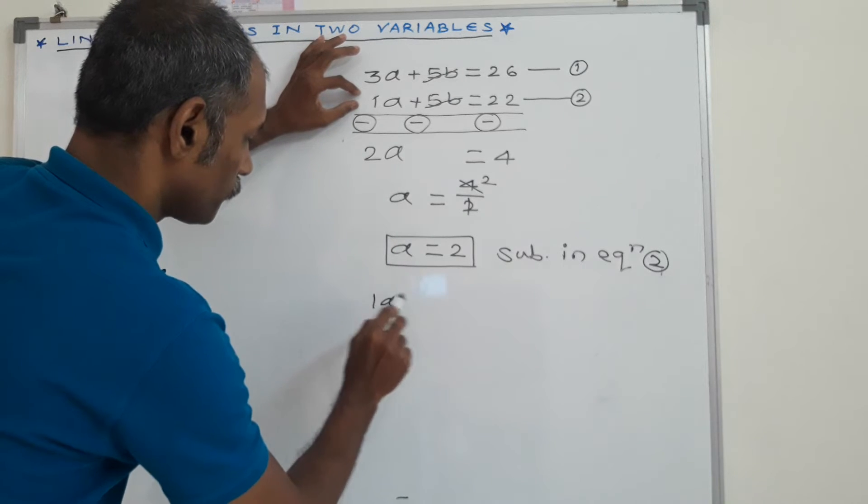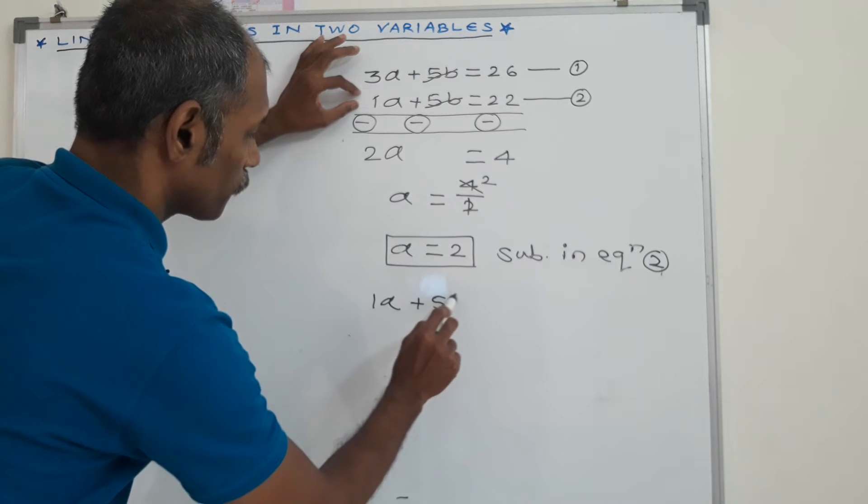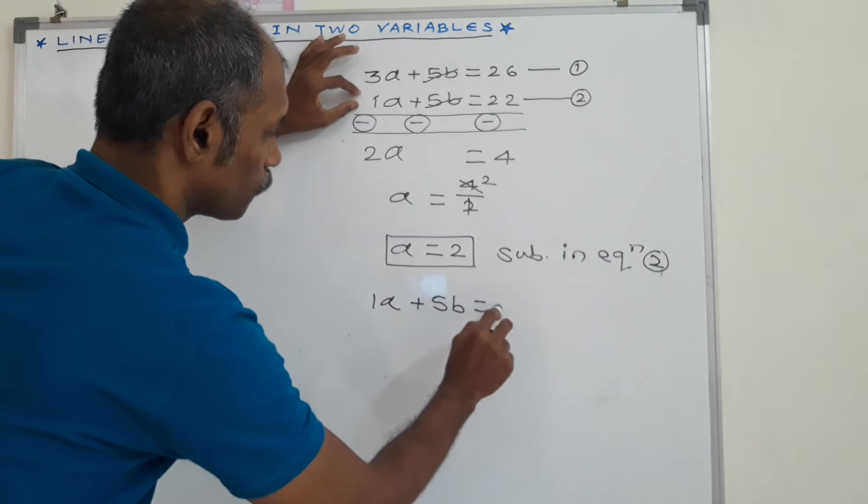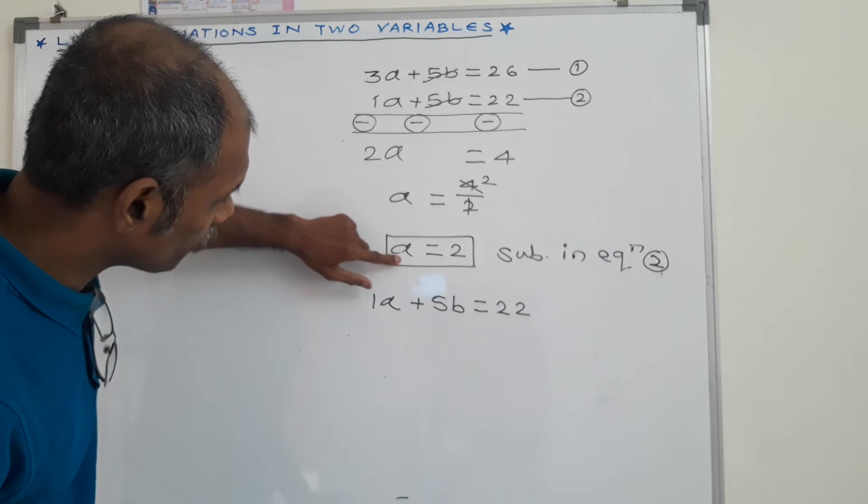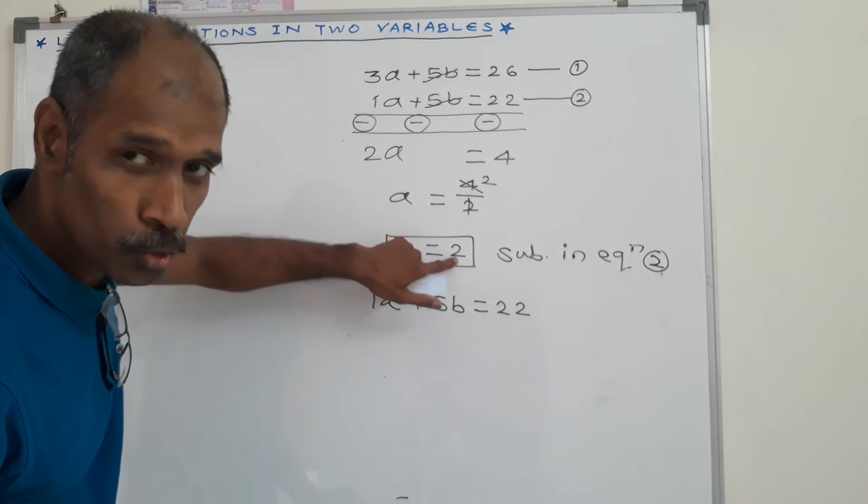A plus 5B is equal to 22. Now we put this value of A. Value of A is 2.